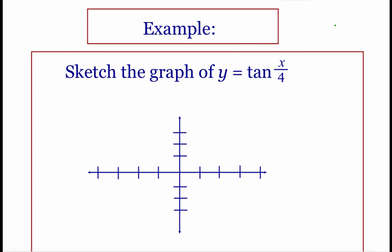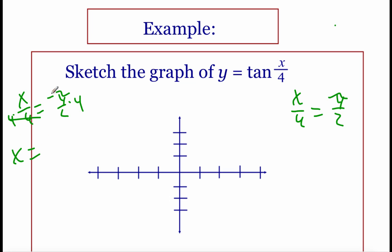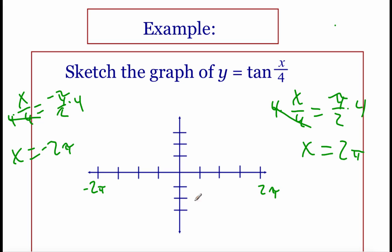Let's sketch the graph for y = tan(x/4). First, find the asymptotes: set x/4 equal to negative pi over 2, multiply both sides by 4, and get x = -2π. Set x/4 equal to positive pi over 2, multiply by 4, and get x = 2π. So there are asymptotes at -2π and +2π. Directly between -2π and +2π is 0, so there's an x-intercept at 0.